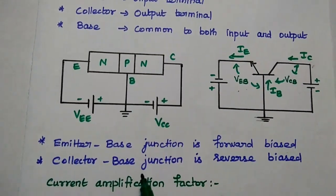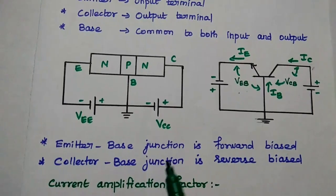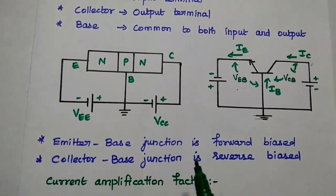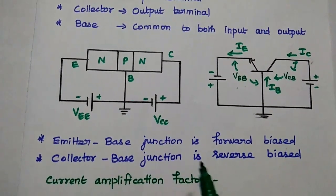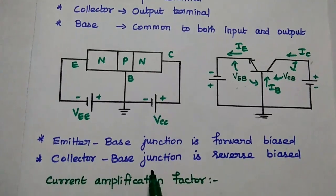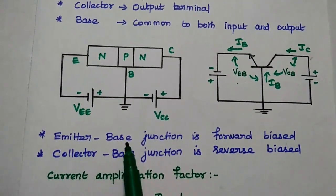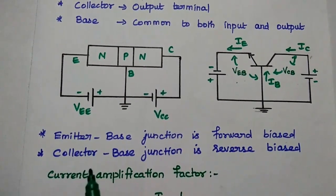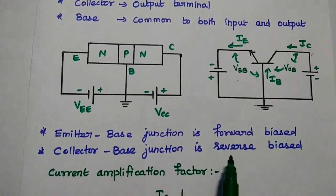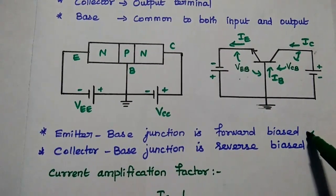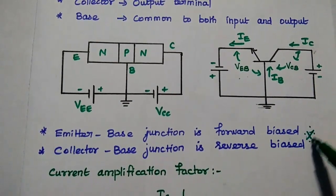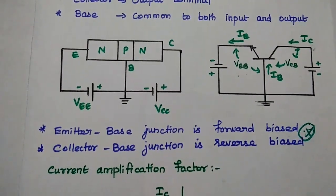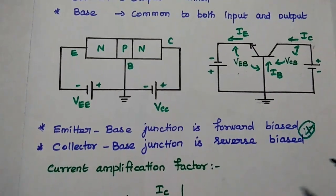Transistor biasing is a very important concept. In order to make the transistor work at a desired operating point, we have to ensure that the emitter-base junction is forward biased and the collector-base junction is reverse biased. This is a very important condition to make the transistor work at the desired Q point.